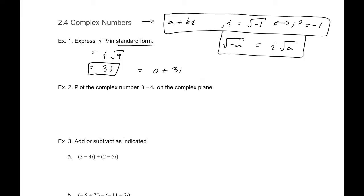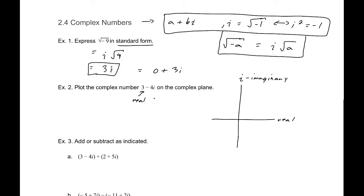Now, plot the complex number 3 minus 4i in the complex plane. To do this, draw a new set of coordinate axes: an imaginary axis and a real axis. This works just like the Cartesian plane. The real part is three, so go to three on the real axis, and the imaginary part is negative four, so go down to negative four on the imaginary axis.